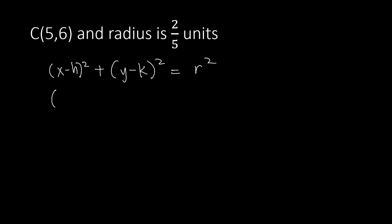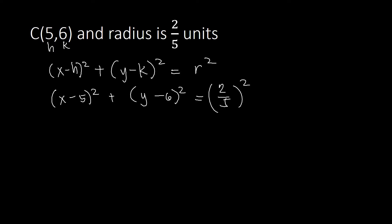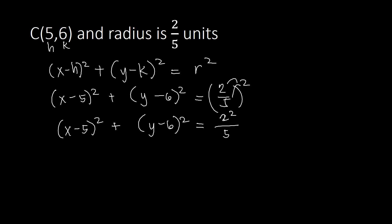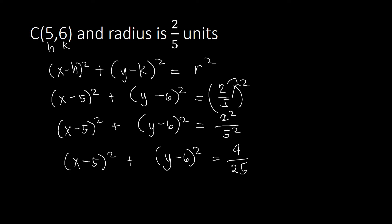Plugging in h = 5 and k = 6, we get (x − 5)² + (y − 6)². For the right side, we raise 2/5 to the power of 2, distributing the exponent to numerator and denominator: 2² over 5² = 4 over 25. So our final standard equation of the circle is (x − 5)² + (y − 6)² = 4/25, which cannot be reduced.